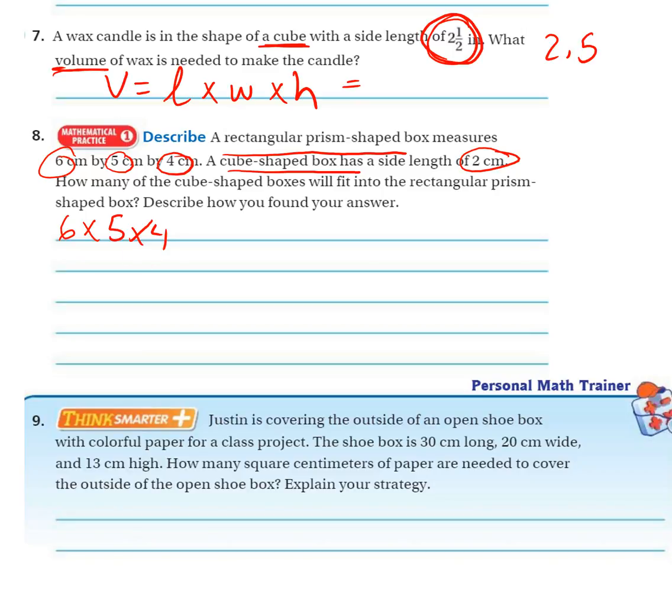That'd be 30 and then 120 centimeters cubed. And then this one's going to be 2 times 2 times 2, so that's 2 times 2 is 4, 4 times 2 is 8 centimeters cubed.